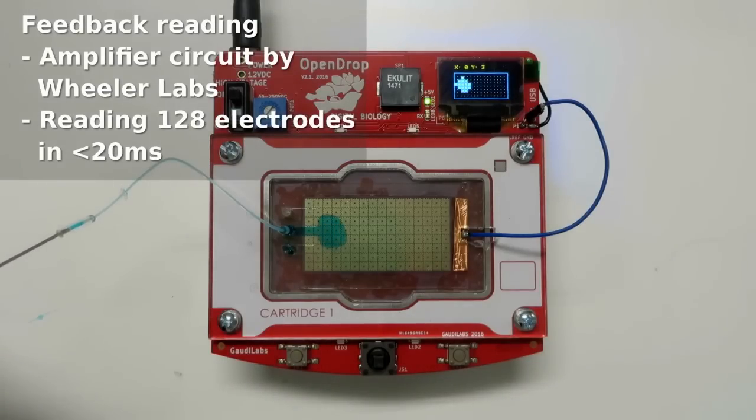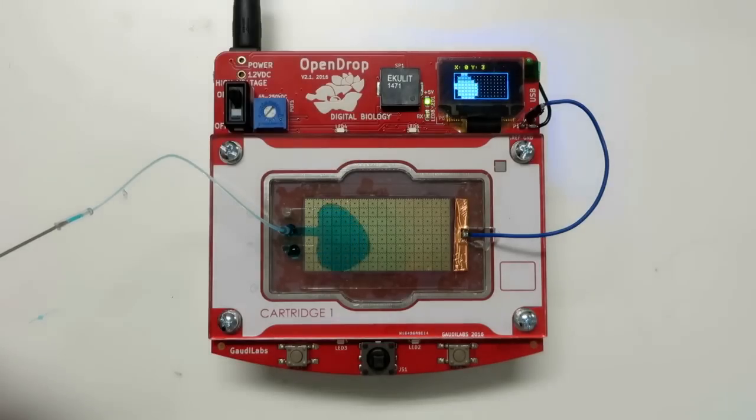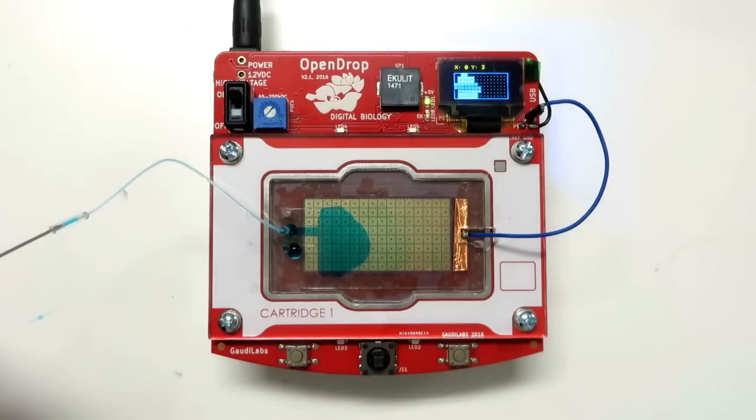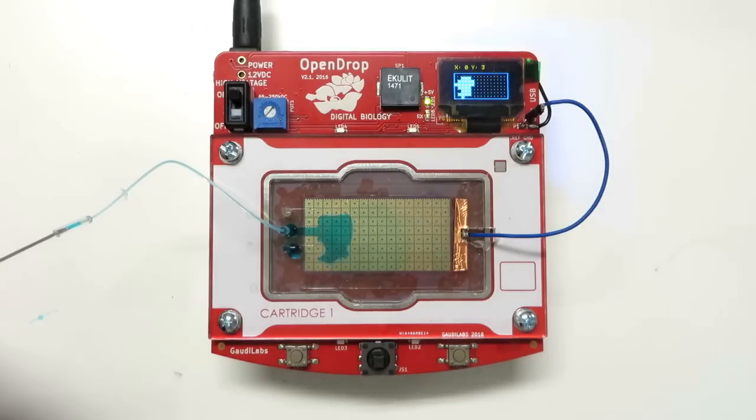The OpenDrop version 2 has an amplifier circuit, actually by Wheeler Lab from the DropBot, that with the new library can read all the 120 electrodes in less than 20 milliseconds, which means I get a signal from each electrode if there is a droplet present or not.